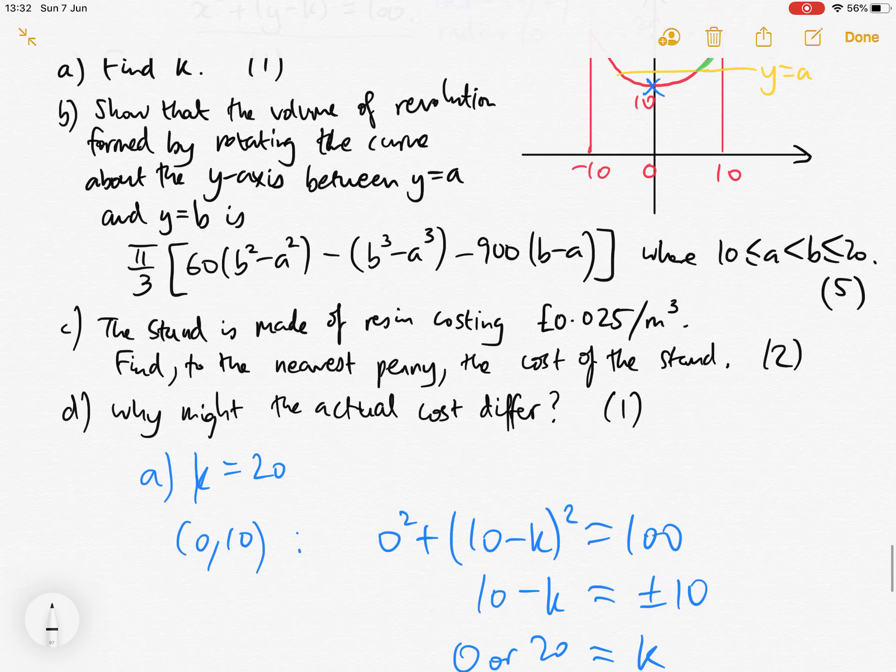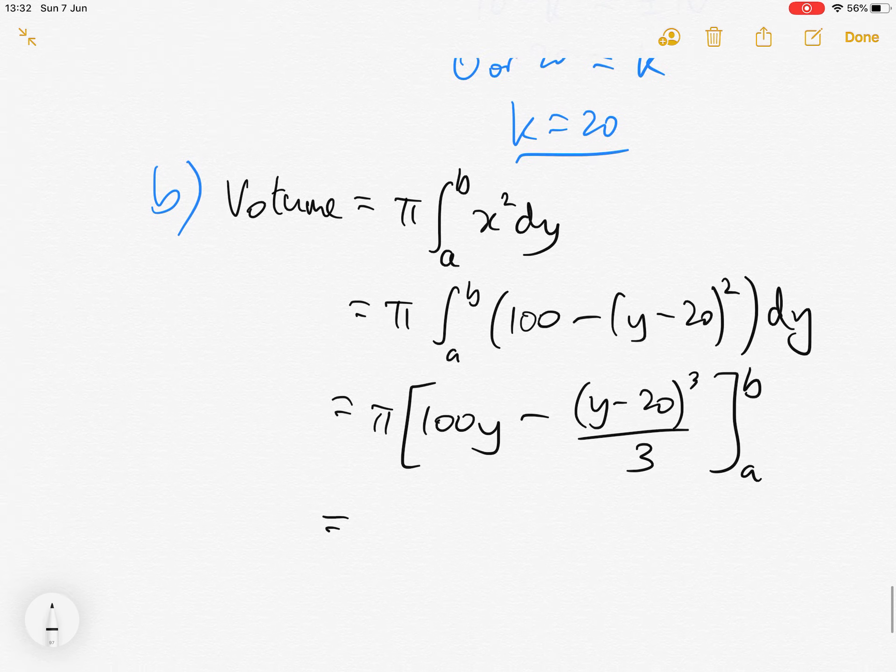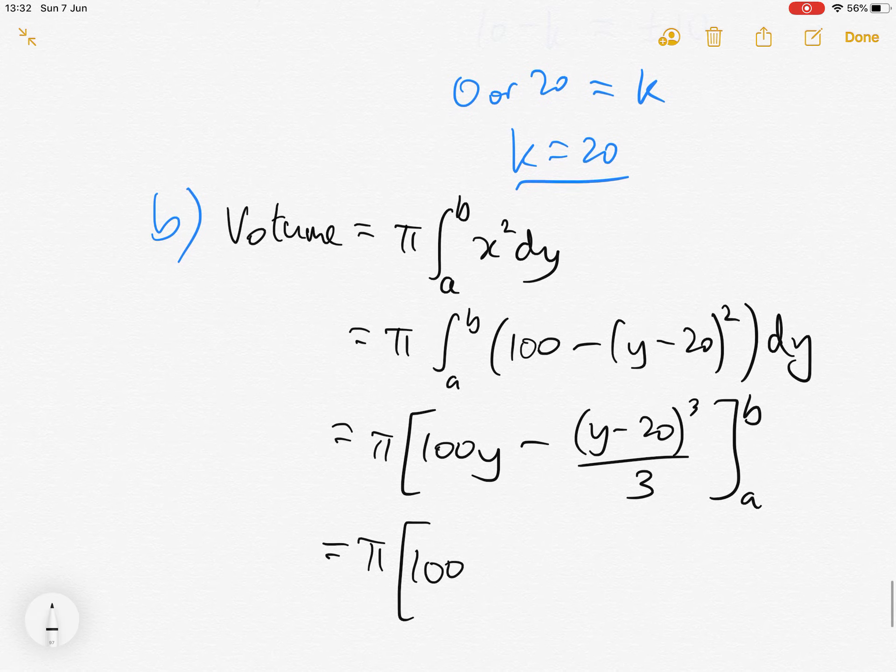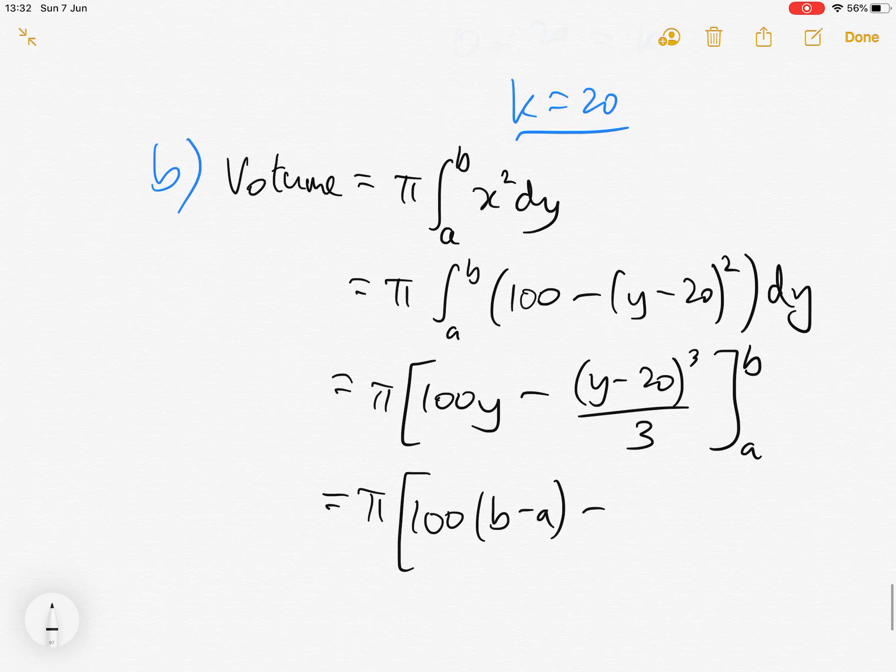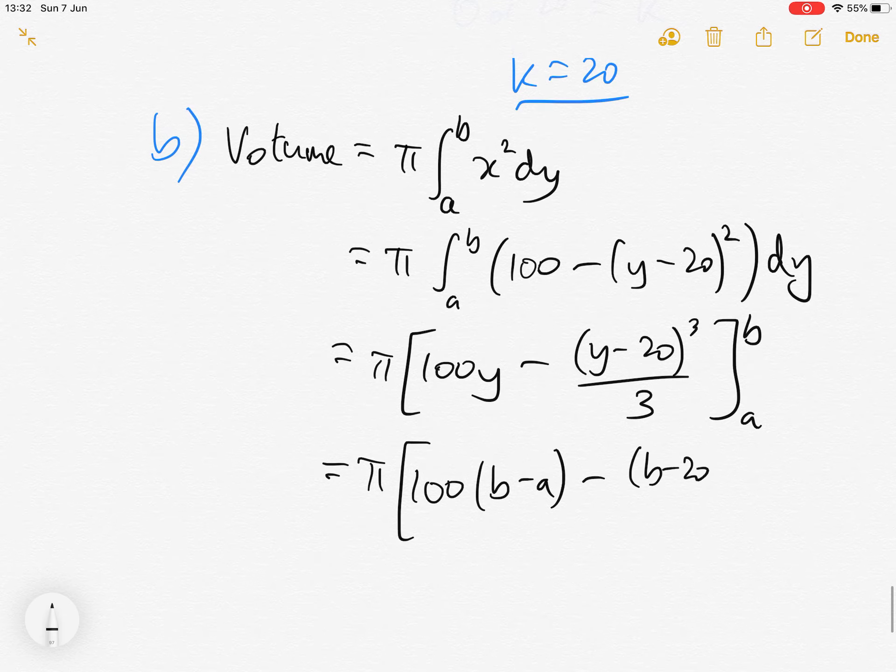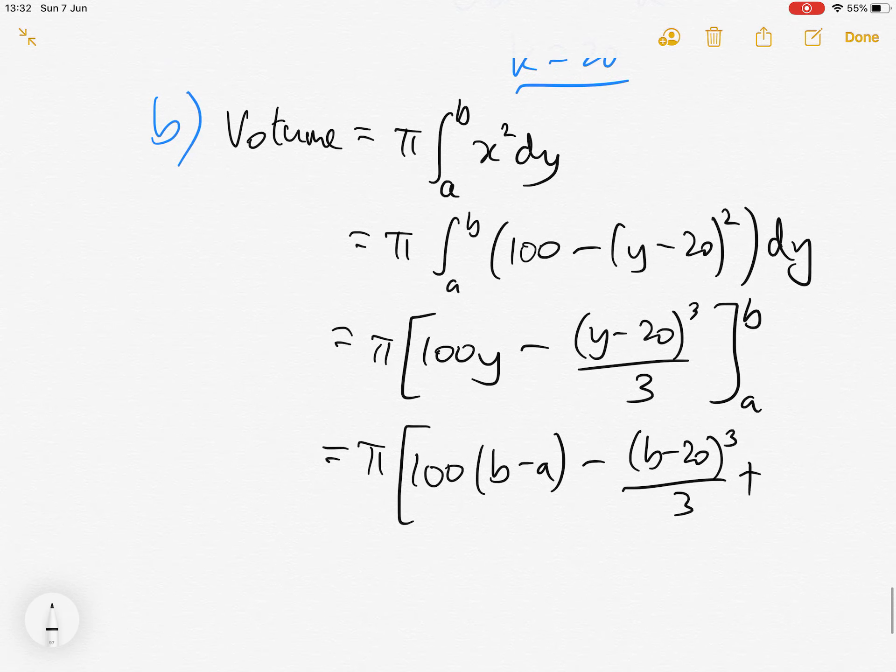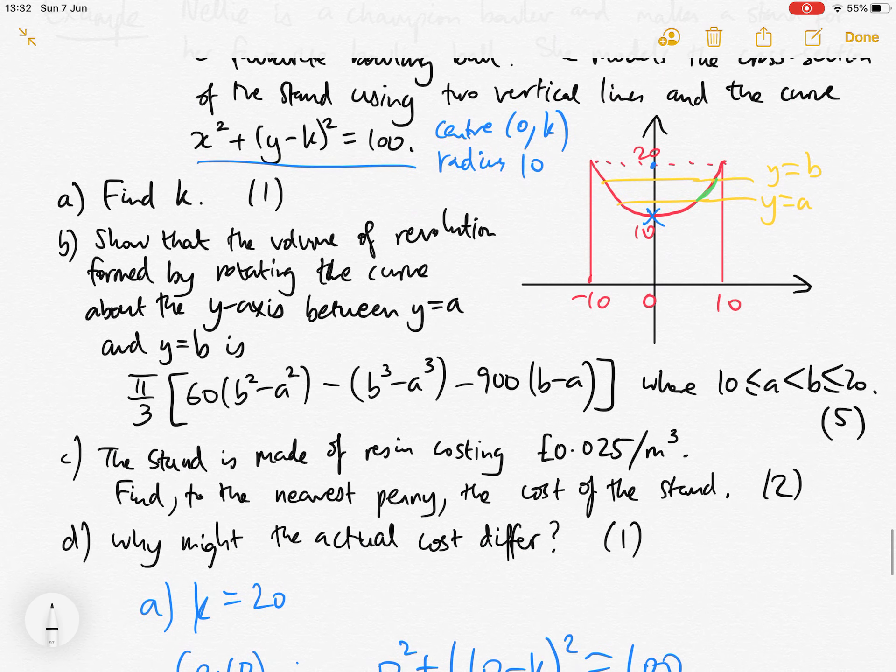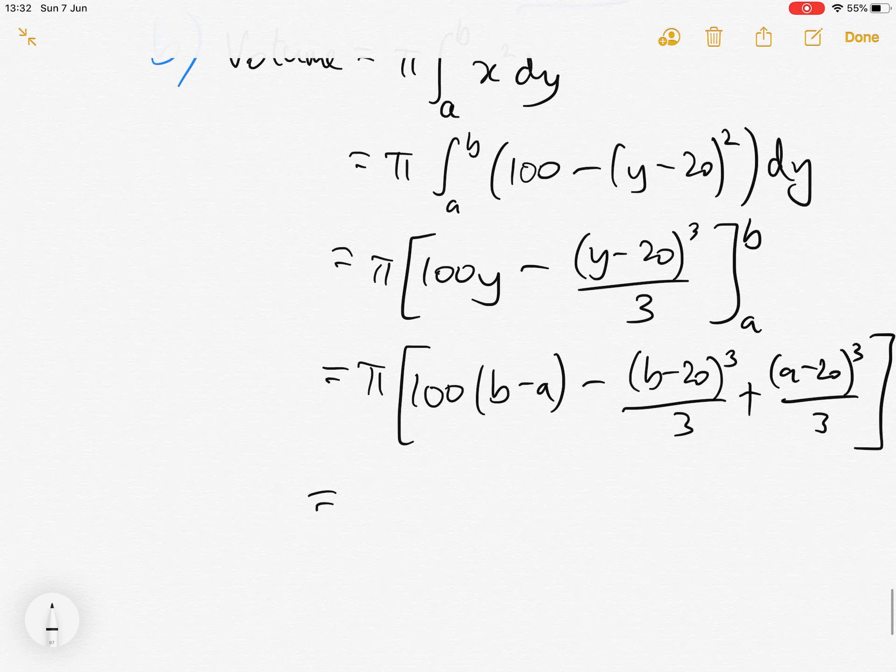To get this answer, we're probably going to have to expand out. So we'll get 100 b minus a minus b minus 20 cubed over 3 plus a minus 20 cubed over 3. We want pi over 3 outside, so taking the third out: pi over 3 times 100 b minus a minus b minus 20 cubed plus a minus 20 cubed.